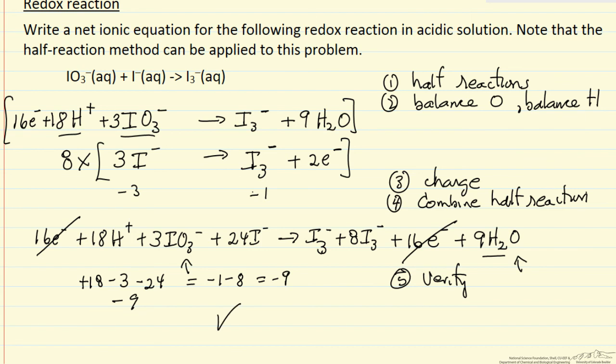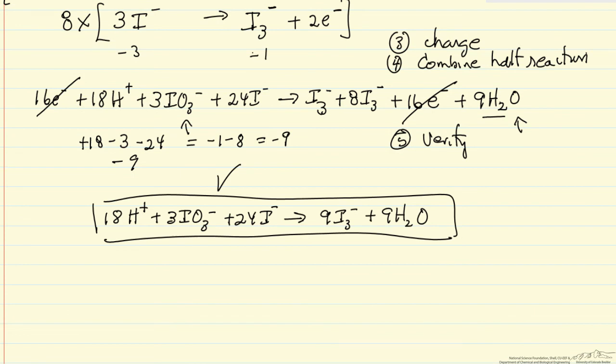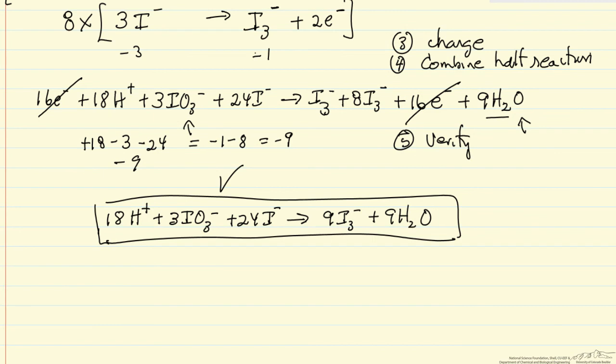So we have the correct balanced equation. And you can see it's unlikely we would have been able to balance this equation by inspection. Following this systematic procedure, we directly get the balanced equation for this oxidation-reduction reaction.